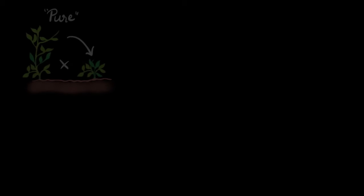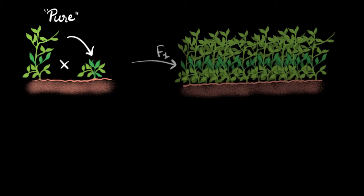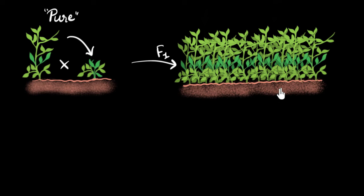In a previous video, we had seen one of Mendel's experiments. He took a pure tall pea plant and cross-fertilized it with a pure short pea plant, and saw that the offsprings were all tall. He called them the F1 generation. This was shocking because we believed crossing them would give us some medium-sized plants, but we didn't — we got all tall. No short, no medium, all tall.